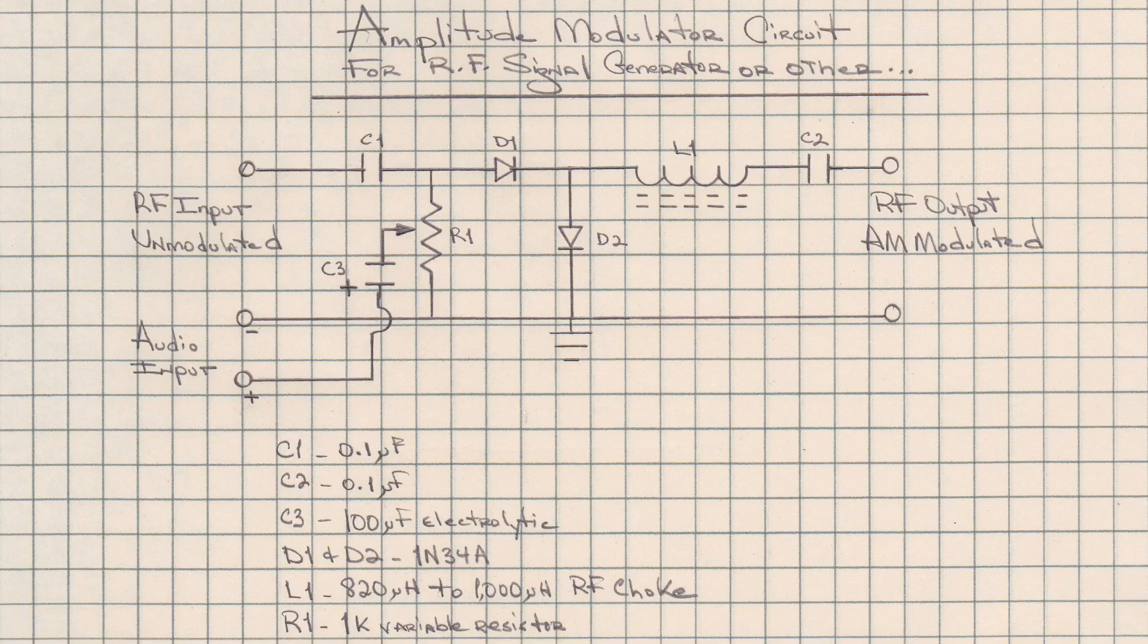You can see diodes D1 and D2. That's what allows us to add the modulation back to the RF carrier.